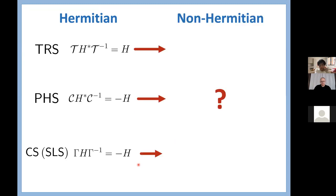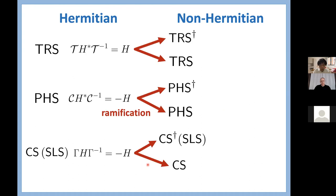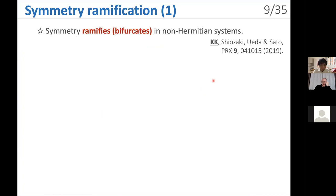We now consider the generalization of these symmetries for non-Hermitian systems. It is non-trivial whether these symmetries remain the same even in the presence of non-Hermiticity. In fact, we find that each symmetry ramifies into two different symmetries due to non-Hermiticity. In addition, one of the time-reversal symmetries and one of the particle-hole symmetries are unified into the same symmetry class, again due to non-Hermiticity. We discuss this symmetry ramification and unification in non-Hermitian physics in detail.